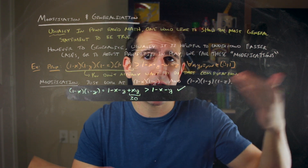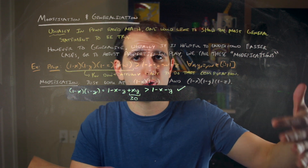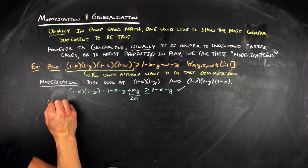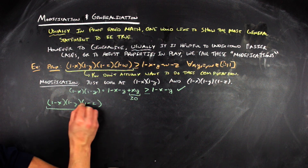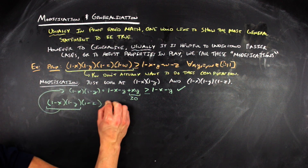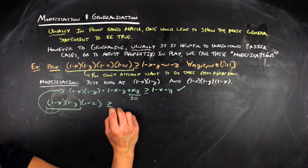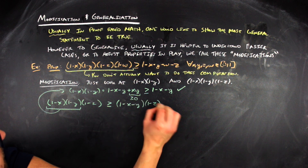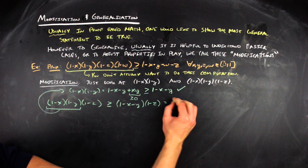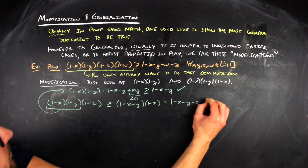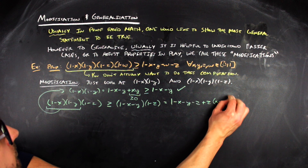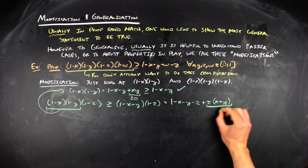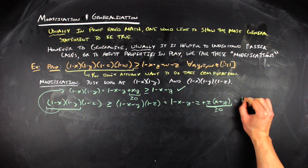Now if we want to see how this would apply to the problem with four terms, it might be helpful to just do the three-term problem first. The first thing you notice is that the problem for three terms has the problem for two terms inside of it. So we can look at the first two terms and use the inequality we derived from the two-term modification. The product of those three terms is greater than or equal to the product of (1 minus x minus y) times (1 minus z). Expanding that out by polynomial multiplication, you get 1 minus x minus y minus z plus z times (x plus y).